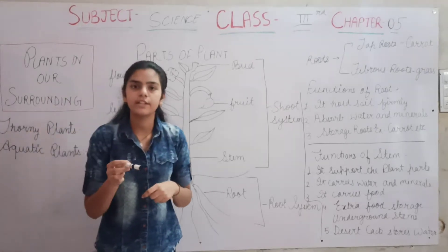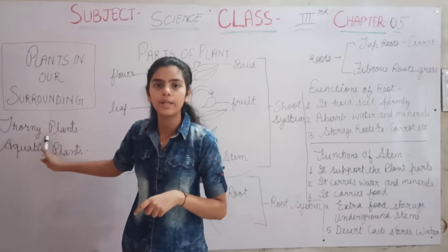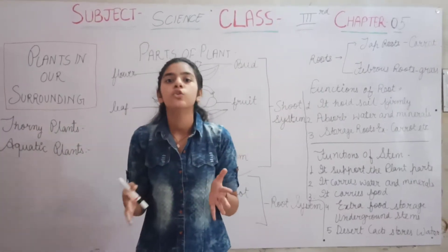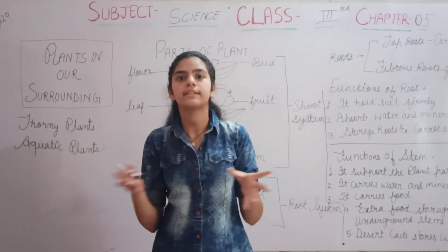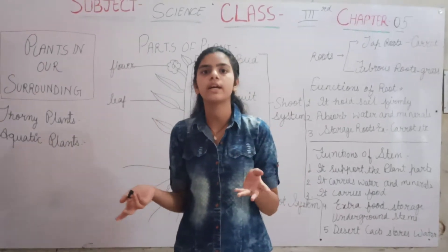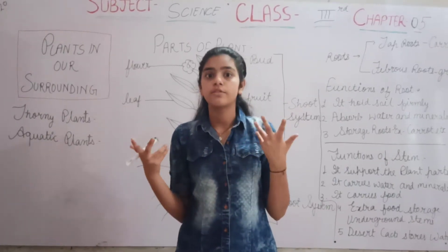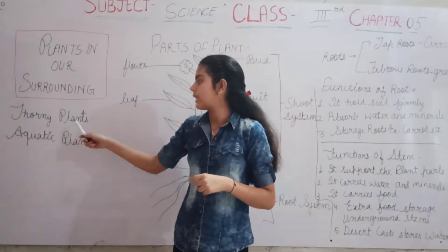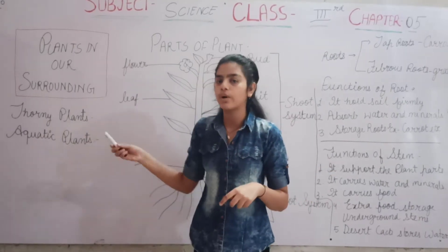There is an activity given in our book about thorny plants and aquatic plants. What are thorny plants? The plants present in the sandy and desert areas — where there is dry sand and less quantity of water. So the plants which grow in sandy and desert areas are known as thorny plants.